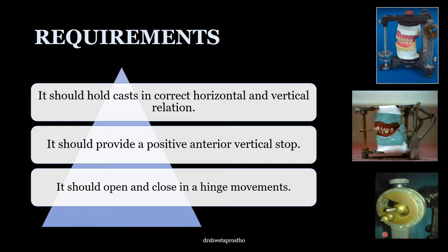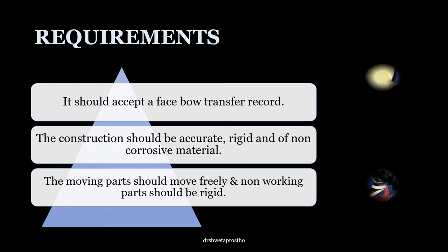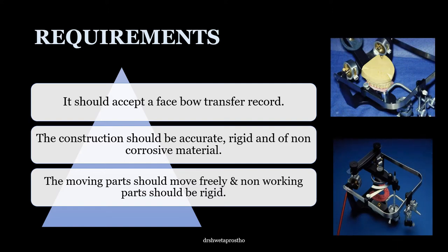It should open and close in hinge movements — this is the condylar element and the condylar shaft which forms the condylar guidance. It should accept the face bow record. The face bow is an instrument used to record the spatial relationship of the maxillary arch to the cranium, and this can be easily transferred to the articulator. The material used for making the articulator should be accurate, rigid, and non-corrosive.